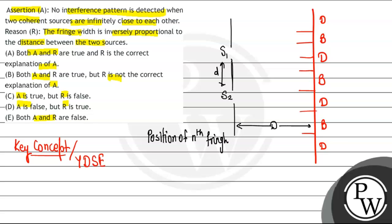If we talk about the bright fringe, the formula for the position of bright fringes is: x equals n·λ·D divided by d, where D is the distance to the screen and d is the separation between the two sources.